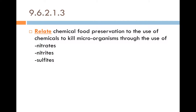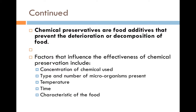Almost finished here. We're now relating chemical food preservation to the use of chemicals that kill microorganisms through the use of nitrates, nitrites, and sulfites. Chemical preservatives are food additives that prevent the deterioration or decomposition of food. Factors that influence the effectiveness include the concentration of the chemicals used, the type and number of microorganisms present, the temperature at which food is stored, how long food is stored, and the characteristics of the food.